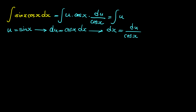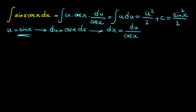Cosine x cancels with cosine x, and we have the integral of u du. Based on the power rule, the integral of u to the power of 1 du is u squared over 2 plus C. Since u is sine x, the answer is sine squared x over 2 plus C.